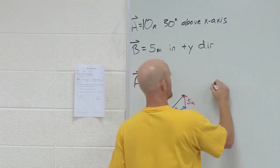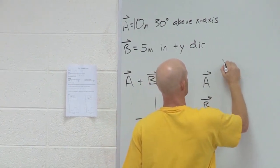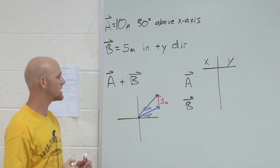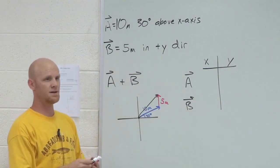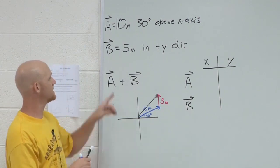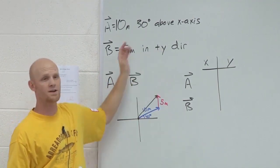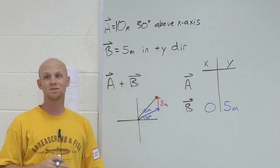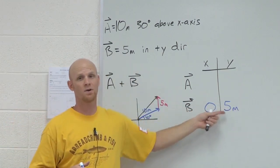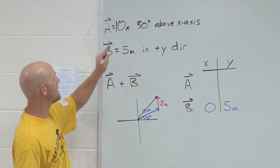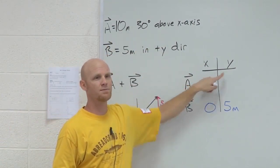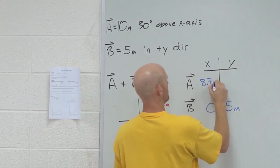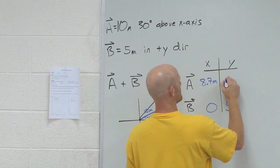What I usually do is take vector A and vector B, split them into x and y components, and make a nice little table. For vector B: what is the x-component? Zero — it's perfectly in the y-direction, so there's no x-component. Its x-component is zero and its y-component is all of it — 5 meters. That's why when a vector is all in the x or all in the y, breaking it into components is really simple — no sines or cosines needed. For vector A, since it's the same vector we used earlier: the x-component is 8.7 meters and the y-component is 5 meters.